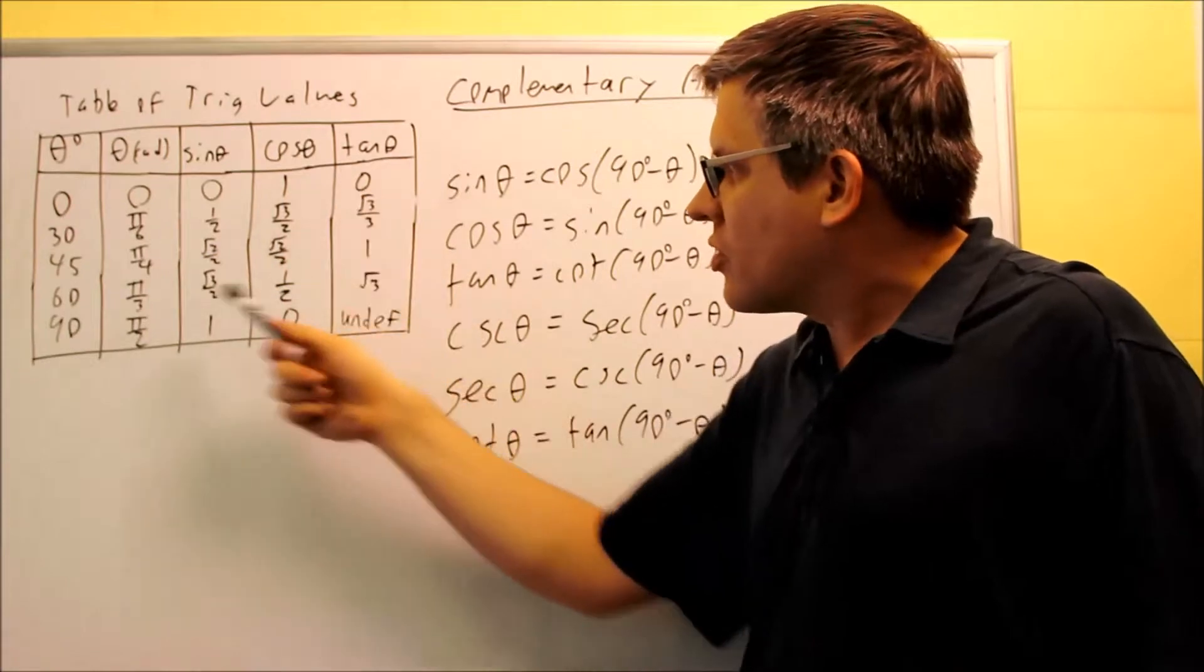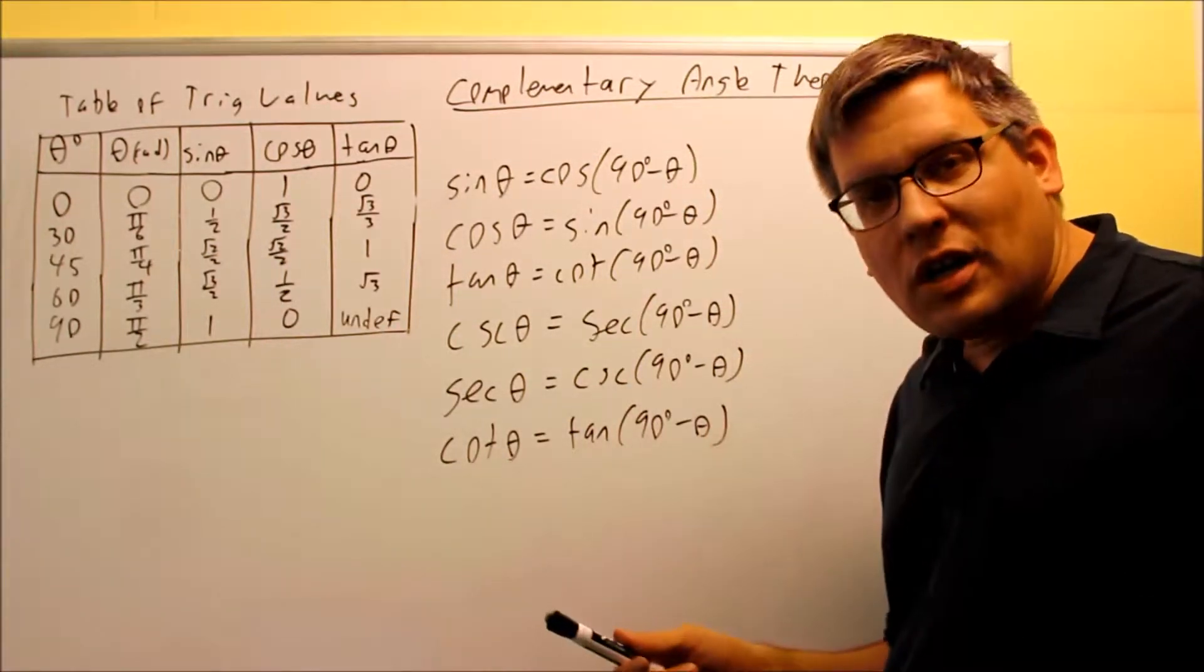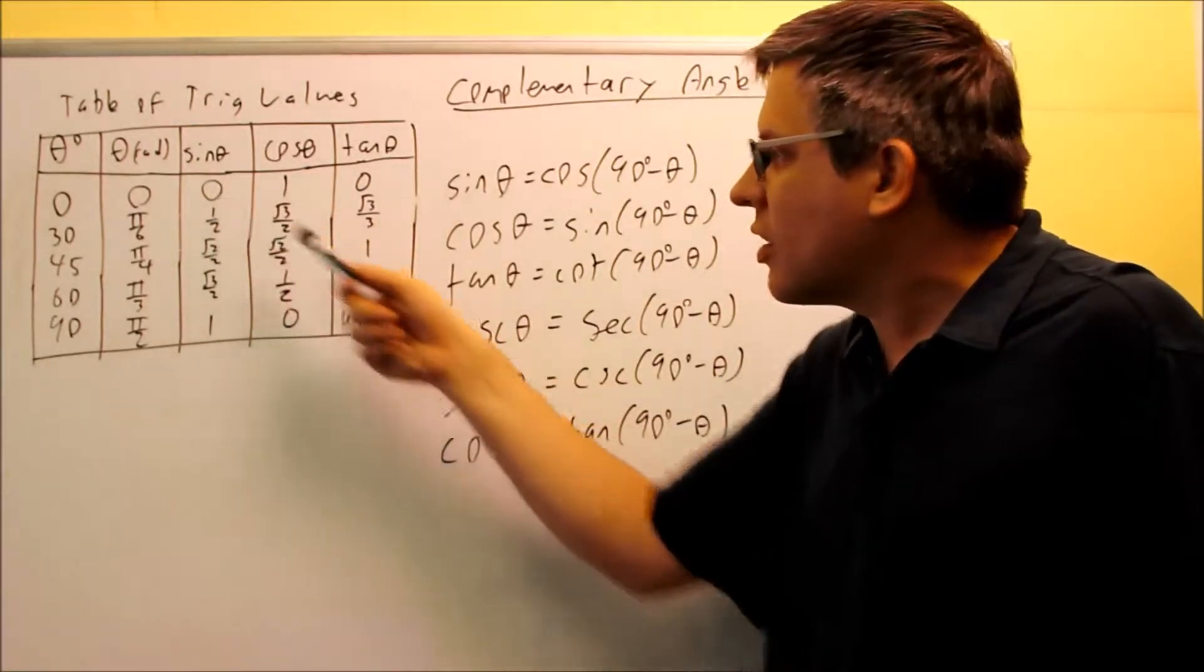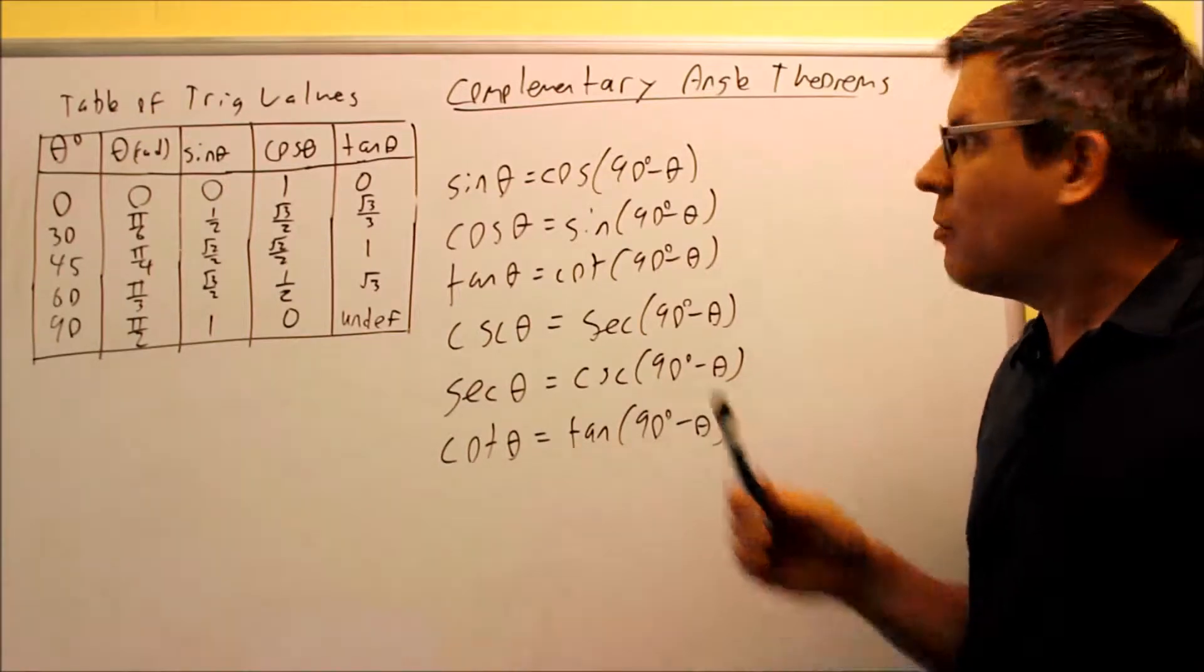So sine 30 and cosine 60, what we notice about the angles 30 and 60, they add up to 90 degrees. So because you have two different places on the table that are the same, this is actually where the complementary angle theorems come from.